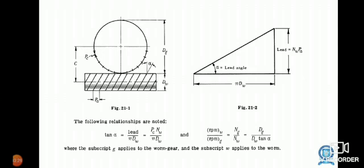The following relationships are noted: tan α = lead / (π d_W) = (P_C × N_W) / (π d_W) and N_G / N_W = (D_G / d_W) × tan α.